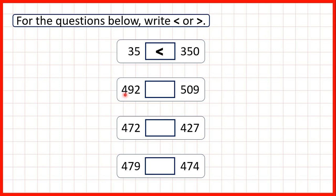Now we have 492 and 509. When we're comparing numbers, we always start by comparing the larger place values. Remember, ones are smallest, then tens, then hundreds. Because both of our numbers are three-digit numbers — they have the same number of digits — we need to look at the hundreds digit first.